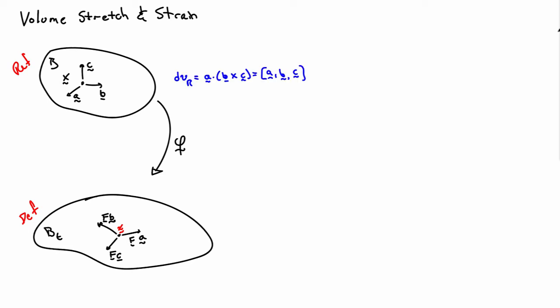Let's start with the volume we began with. That would be the scalar triple product of A, B, and C — so A dotted with B cross C — which is often written using the square bracket notation for the scalar triple product. After deformation, we'll have the scalar triple product of FA, FB, and FC.